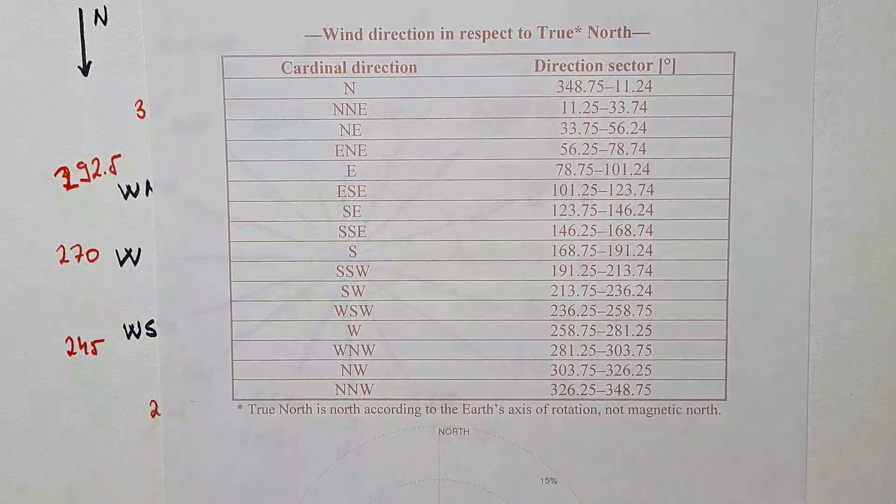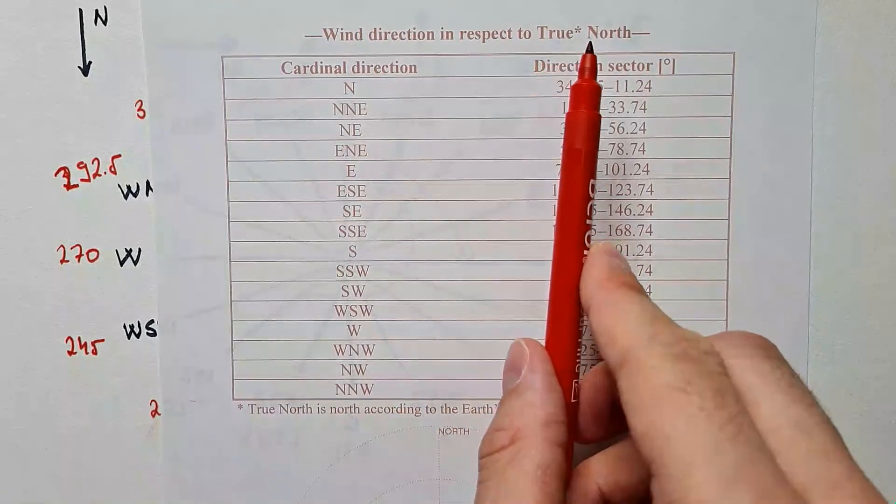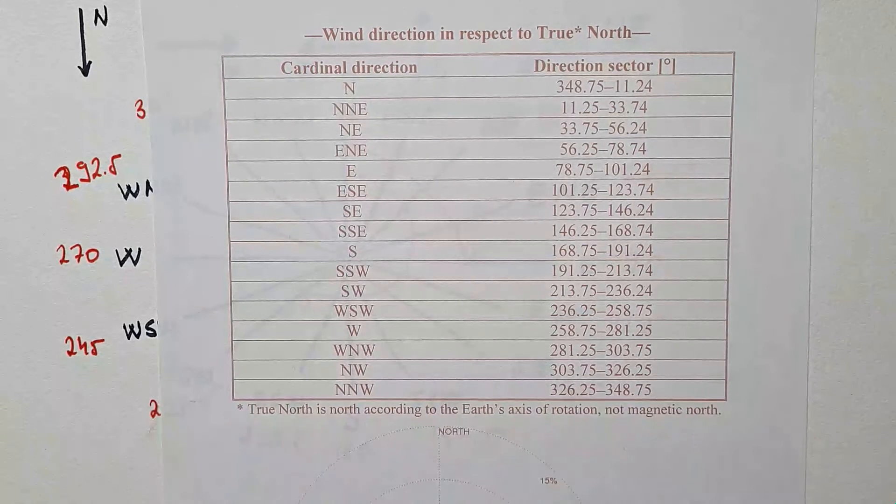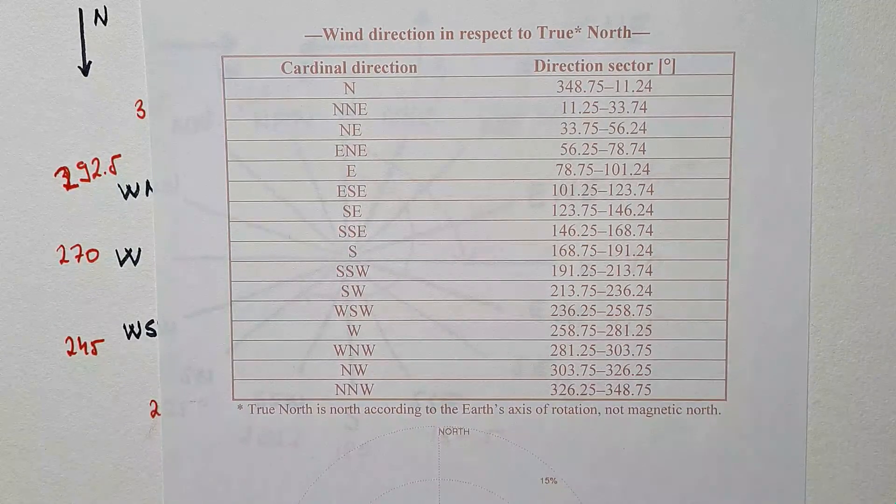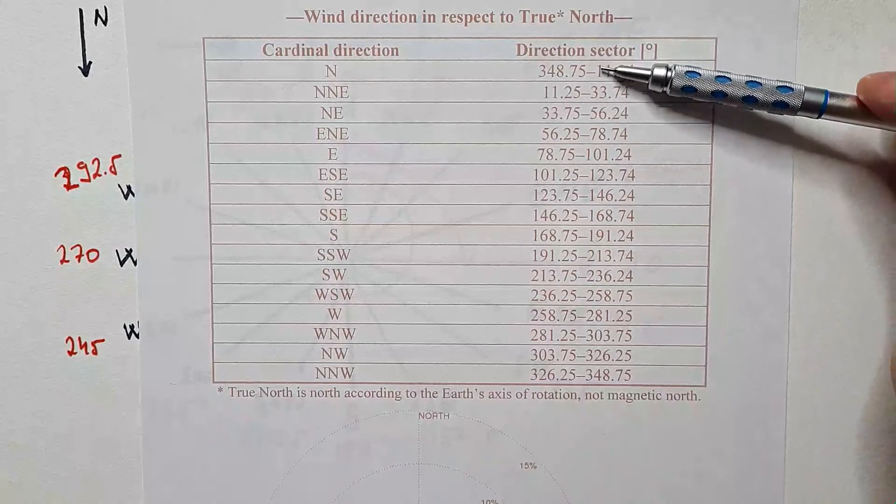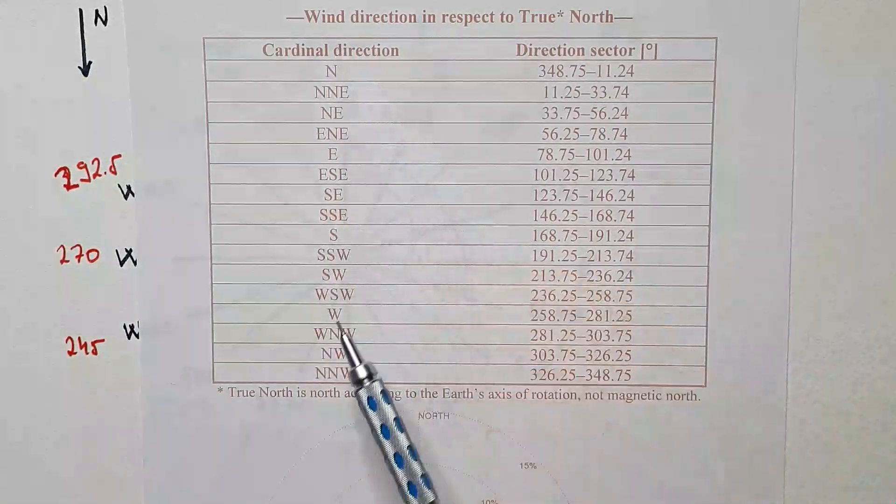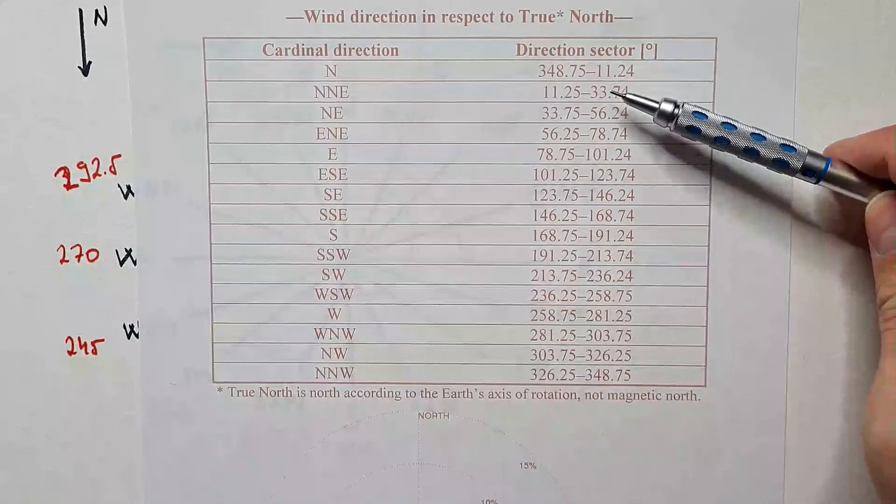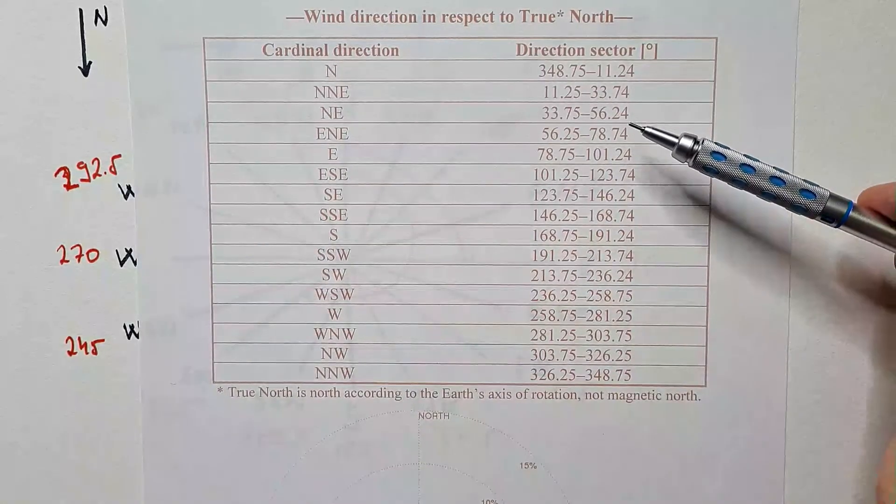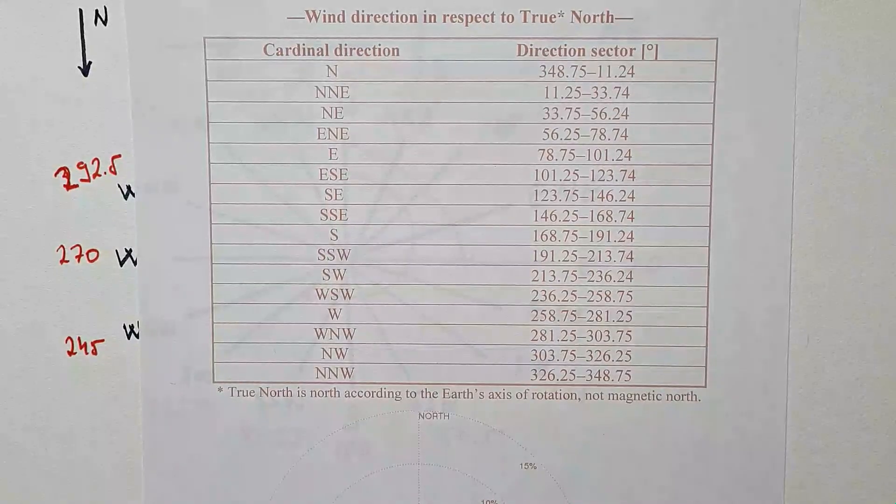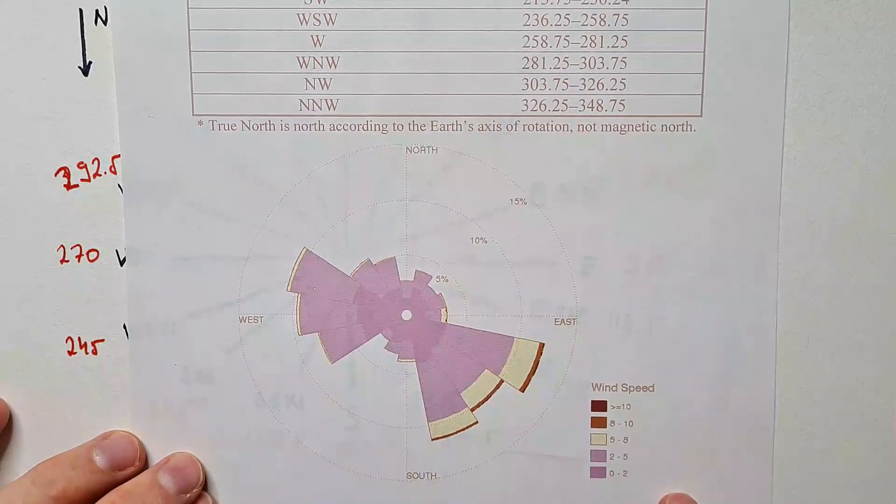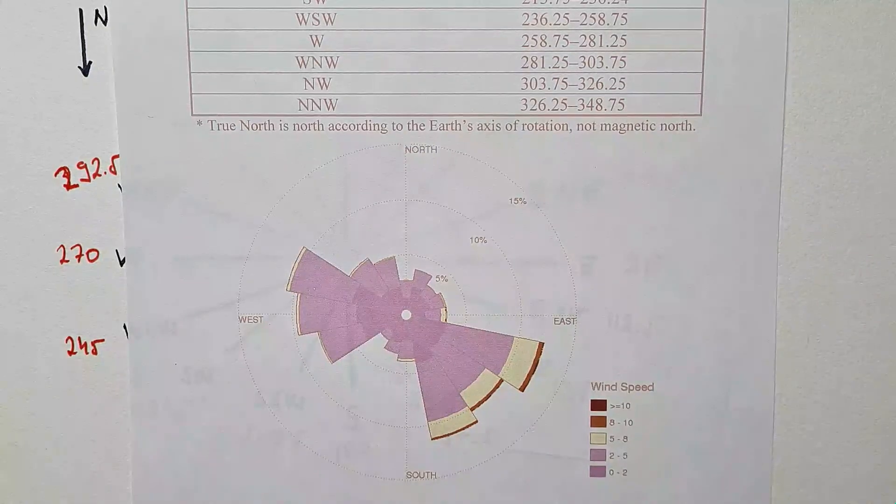So, this is a very important table. It gives us wind direction in respect to true north. And true north is north according to Earth's axis of rotation and not magnetic north. Not north that your compass would give you. In the first column, cardinal directions that I listed here. And here is direction sector associated with each cardinal direction. Of course, I am not going to read these numbers. You can pause the video and look for yourself. But, notice that the width of each direction sector is 22.5 degrees.